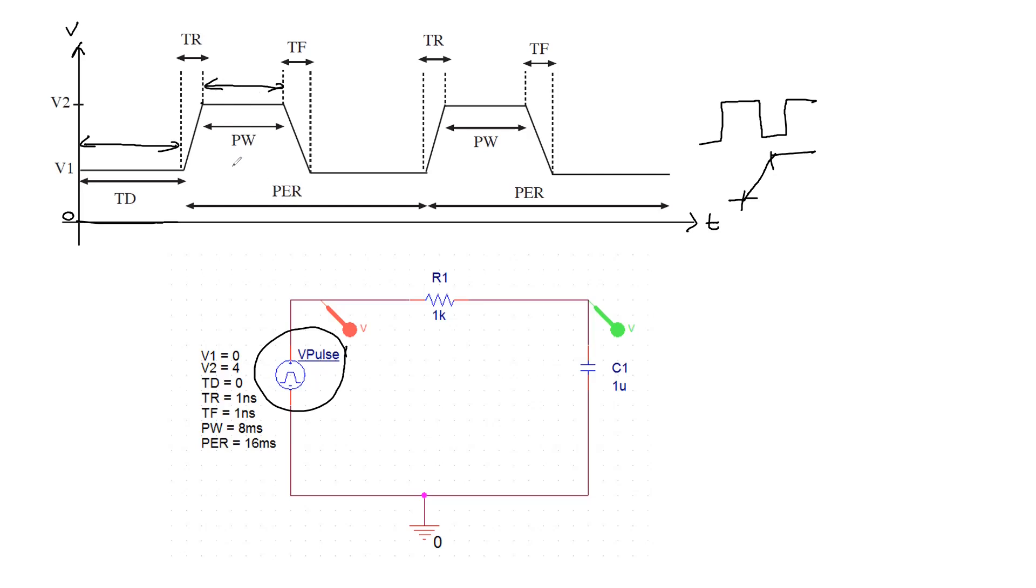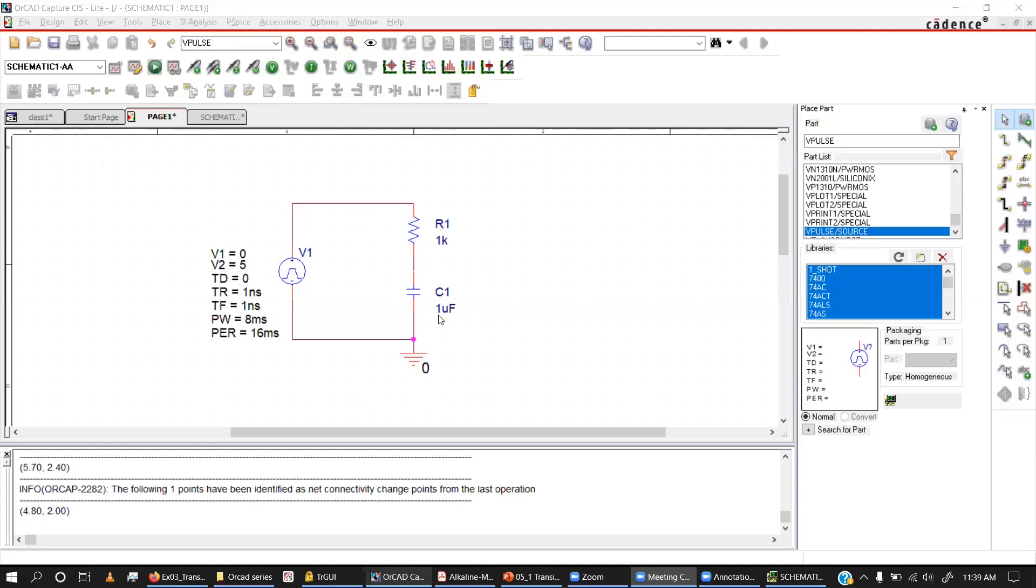The pulse width, that's the time duration, we will use as eight milliseconds. Time period we'll pick as 16 milliseconds for this activity. In this circuit, please note I changed the capacitor value to one microfarad. Default is usually one nanosecond. I'm going to put a probe here, a voltage probe, so I can monitor how voltage is increasing. If needed, I can even monitor how the pulse generator generates voltages.